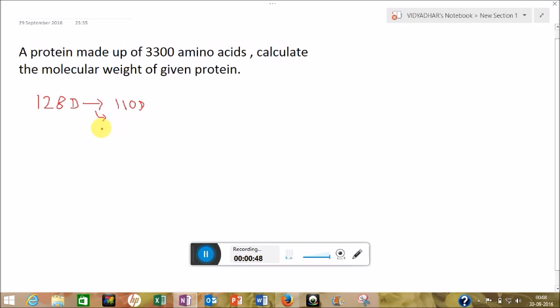So for 3,300 amino acids, the molecular weight will be 3,300 into 110. So after multiplication, we will get 363,000 Dalton, or we can say 363 kilodalton.